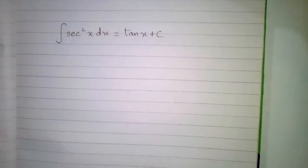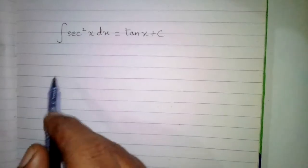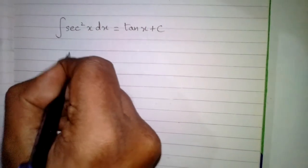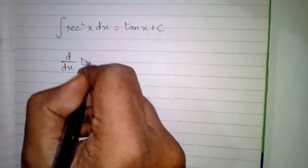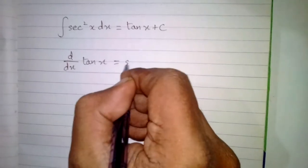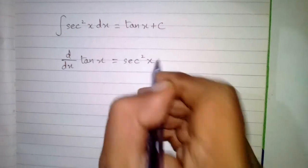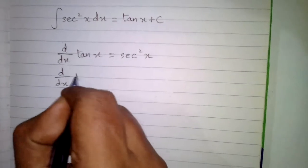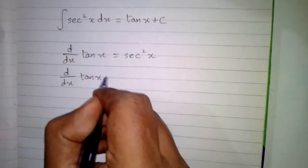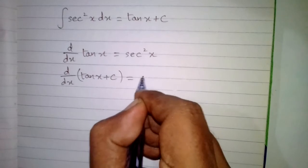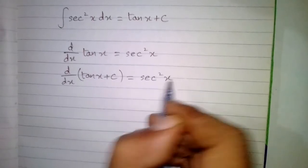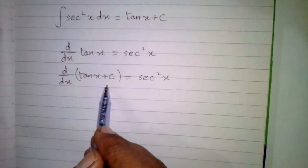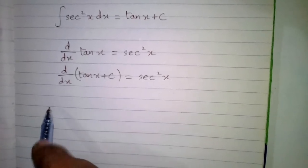In this video we will see that the integral of sec²x is tan x + c. We know that the derivative of tan x is sec²x, so the derivative of tan x plus some constant c is also sec²x, because the derivative of tan x is sec²x and the derivative of a constant is zero. We know that integration is the reverse process of differentiation.